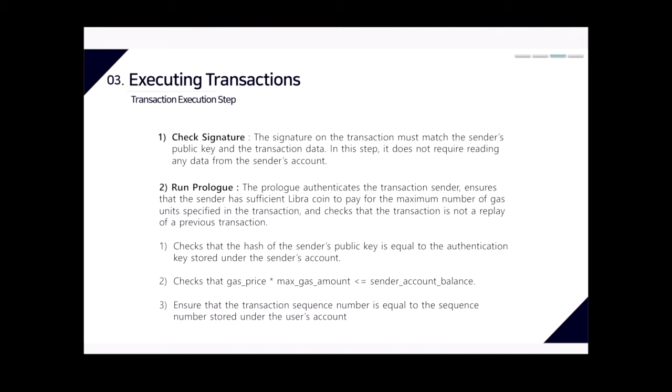In step one, check signature verifies that the sender's public key matches the transaction data signature. In step two, run prologue, the system authenticates the transaction sender, ensures the sender has sufficient Libra coin to pay for the maximum number of gas units specified, and checks that the transaction is not a replay of a previous transaction by comparing the transaction sequence number to that stored under the user's account.